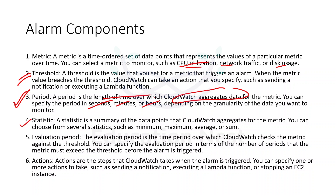Then we have statistic — a summary of data points, because we won't be monitoring each individual data point; instead we have a summary using different stats. It can be minimum, maximum, average, or sum. For example, I can say I want to create one alarm when the average CPU utilization is exceeding 70% for consecutive 10 minutes. I said average CPU utilization — not just CPU utilization — so for 10 minutes, if the average exceeds 70%, notify me.